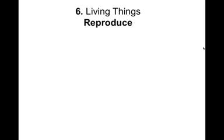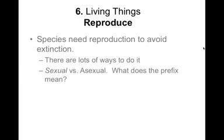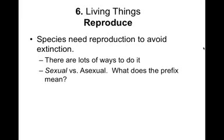Sixth, organisms reproduce in one way or another. This is done either sexually, with male and female sex cells, or asexually, when an individual organism copies itself to make another.